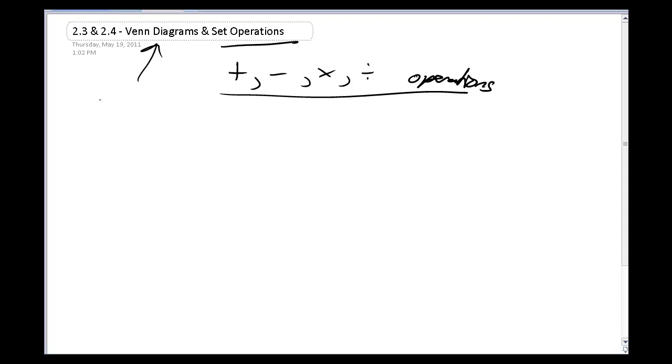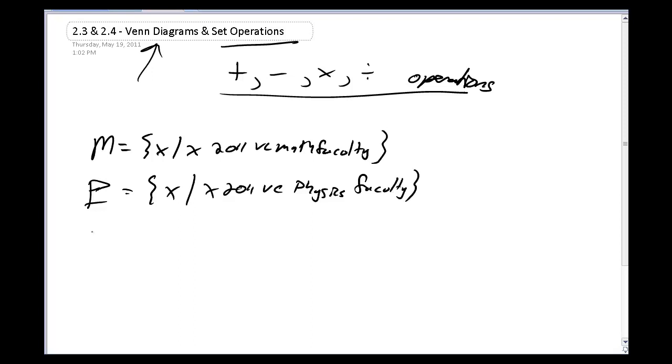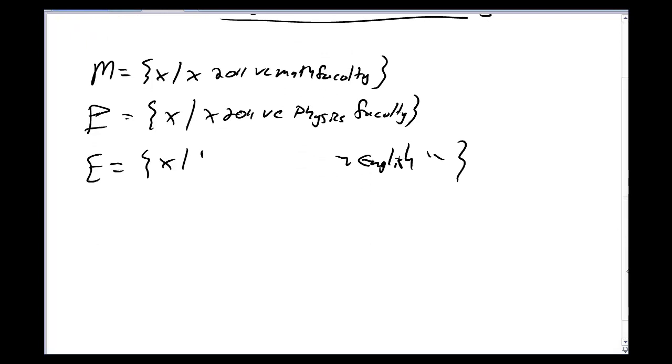So let's go back to two sets that maybe I've talked about before. Set M is going to be the set of all of the X's, where X is going to be a 2011 VC math faculty. It's very specific. P is going to be the set of all the things where the X is the 2011 VC physics faculty. And I'm also going to have E, where it's the same stuff, but this time it's all of the English faculty.